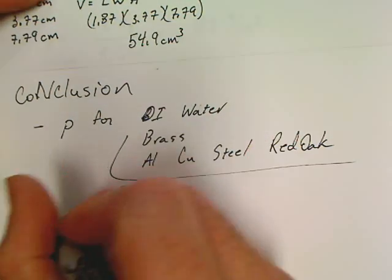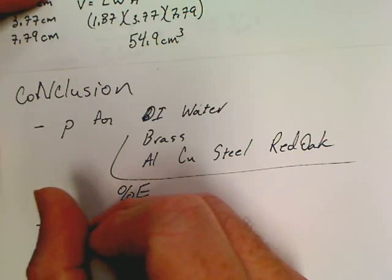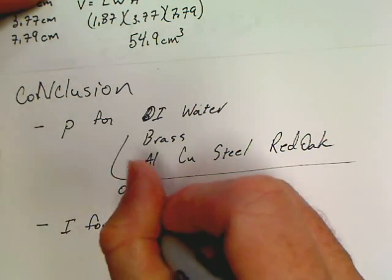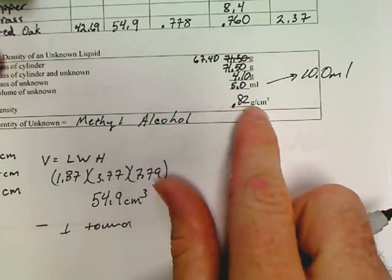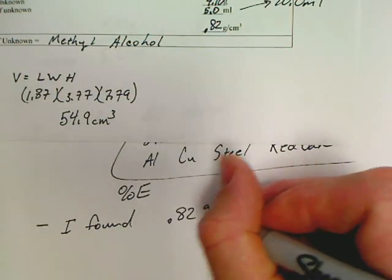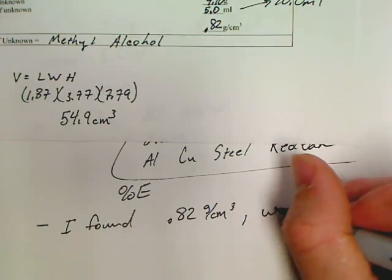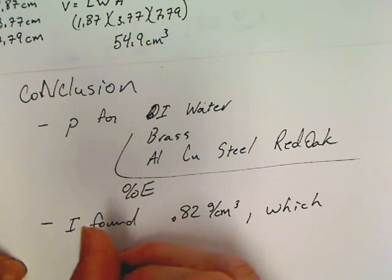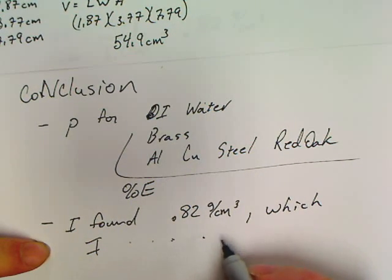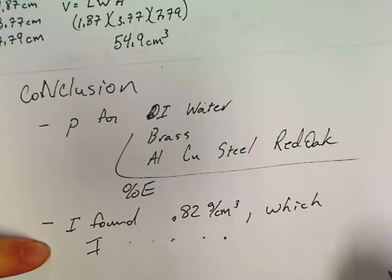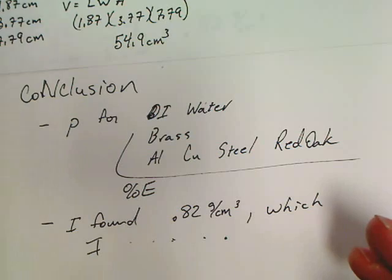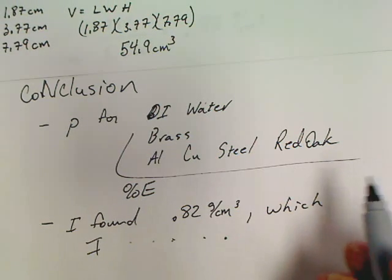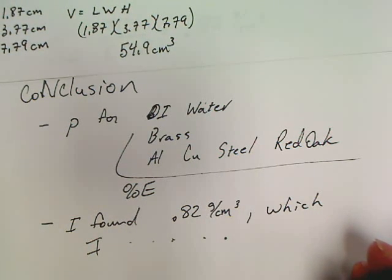I also want in your conclusion, I want you to say, like I found—like me, I would say that I found my unknown to be 0.82 grams per centimeter cubed, which I believe is methyl alcohol because its density is 0.81. And you might even say because I smelled it and it smells like methyl alcohol or acetone. Again, I use different unknowns every year.